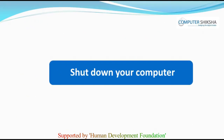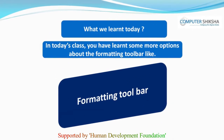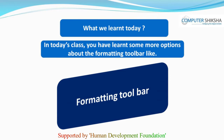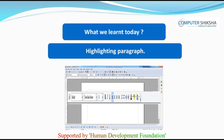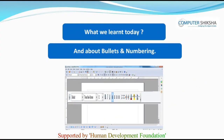Next, shut down your computer properly. In today's class, you have learned some more about the formatting toolbar like highlighting paragraphs, background color, changing the color of the writing, alignment — left, right, center and justify — and about bullets and numbering. Thank you.